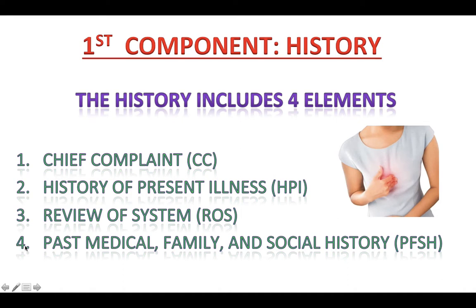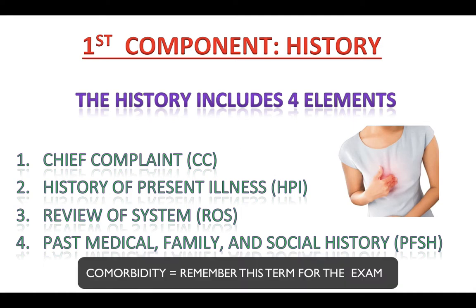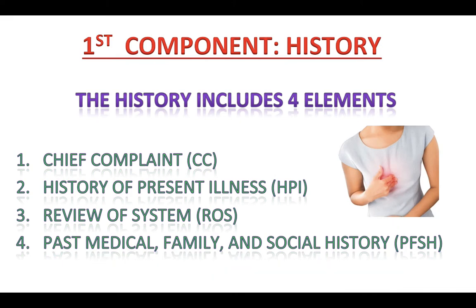Moving on to the past medical history — this element is very important because it will tell you any comorbidity, in other words, any chronic condition that a patient may have. For example: diabetes, hypertension, coronary heart disease, COPD, tobacco smoking, history of cancer, alcohol abuse, etc. These conditions may complicate the treatment, so we have to monitor them and they should be reported. A cut on a finger of a non-diabetic patient is much easier to treat compared to a diabetic neuropathy patient with blood vessel complications.